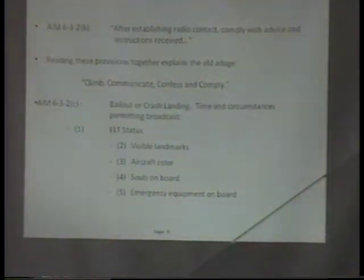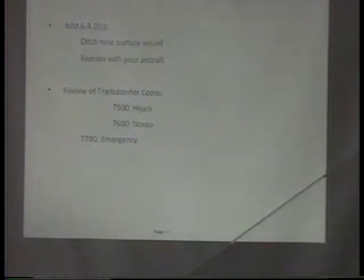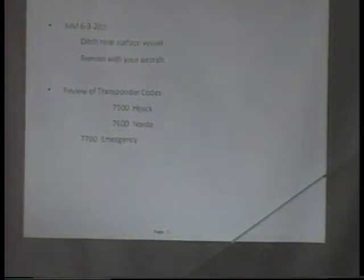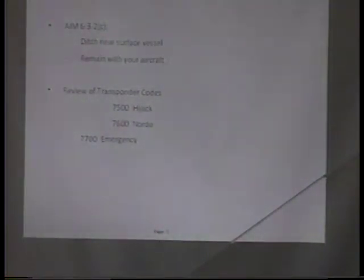Now we have instructions for bailout or crash landing. They would like for you to give your EOT status, visible landmarks, aircraft color, souls on board, and emergency equipment on board like life rafts. You're supposed to ditch near a surface vessel or remain with your aircraft. The AIM says you're supposed to land at a right angle or perpendicular to the swells in the ocean. And here are the transponder codes again: 75, 76, and 77.